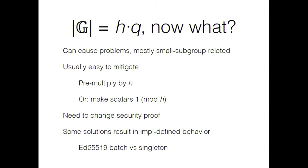This can cause problems if you take a protocol that assumed G was prime order and then adapt it to the case where G is not prime order. Most of these problems relate to the idea that if you give someone a point whose order is 2 or 4, they multiply it by their secret, and end up with a point whose order is still 2 or 4 — and there are only a few such points, so you can probably guess it, and learn a few bits of the secret — specifically, the secret mod h. Usually these problems are easy to mitigate: you multiply the point you get as input by h ahead of time, and if it's zero you abort because the other party is trying to fool you. Or you make your scalar 1 mod h instead of 0 mod h.